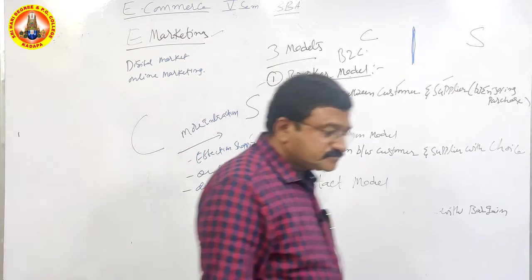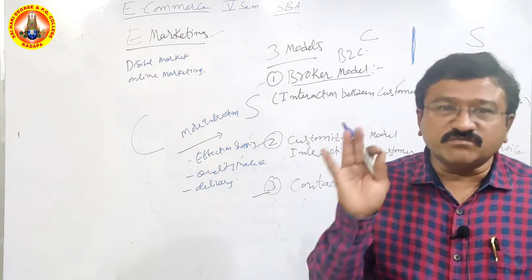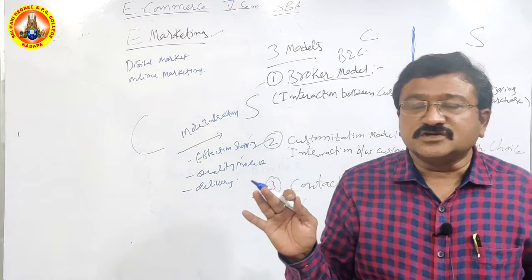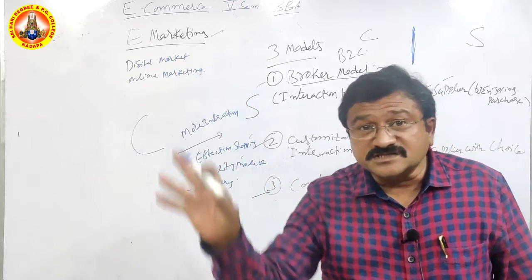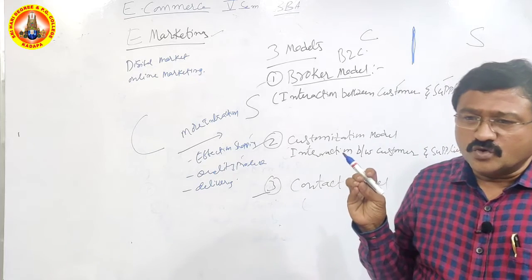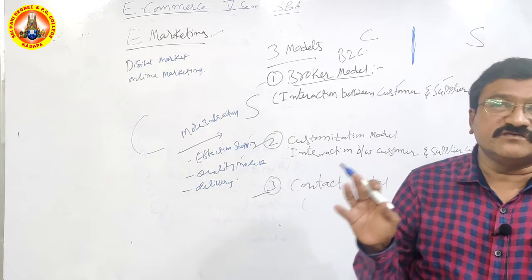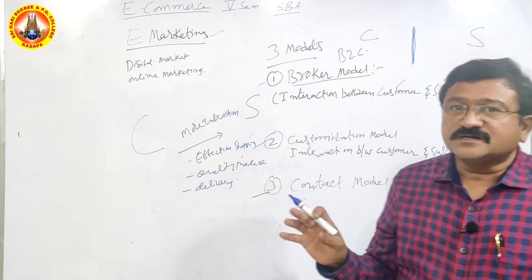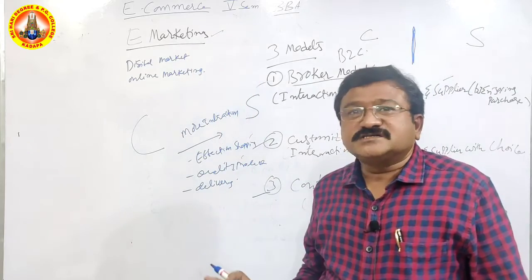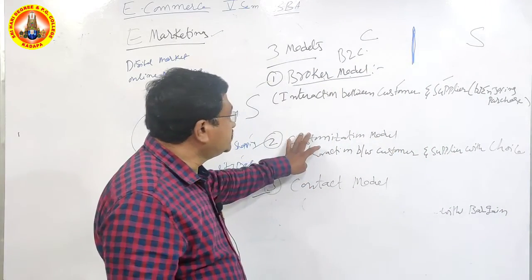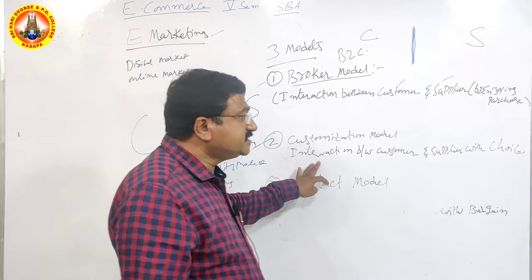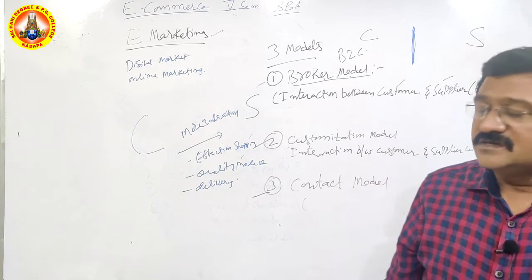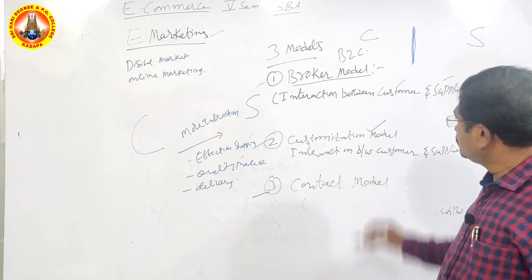The second one is the Customization Model. The customer is generally not happy with just one product — the customer has many choices. So we need to give more choices to the customer instead of giving only one or two options, so that the customer can pick the best quality product from the choices available. That interaction between the customer and supplier should be choice-based — that is the Customization Model.